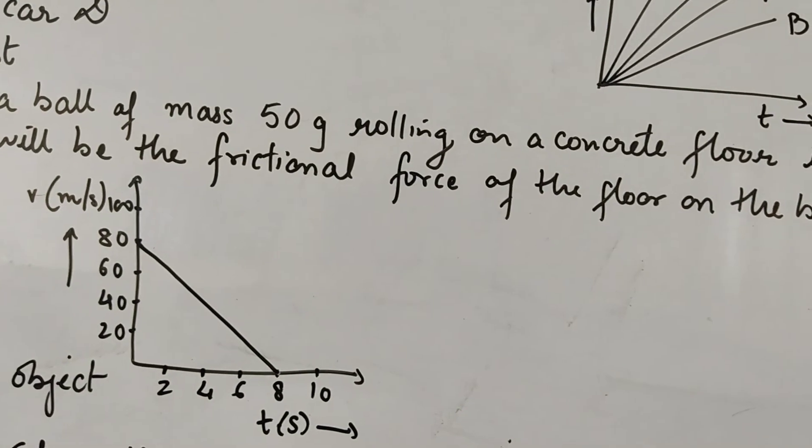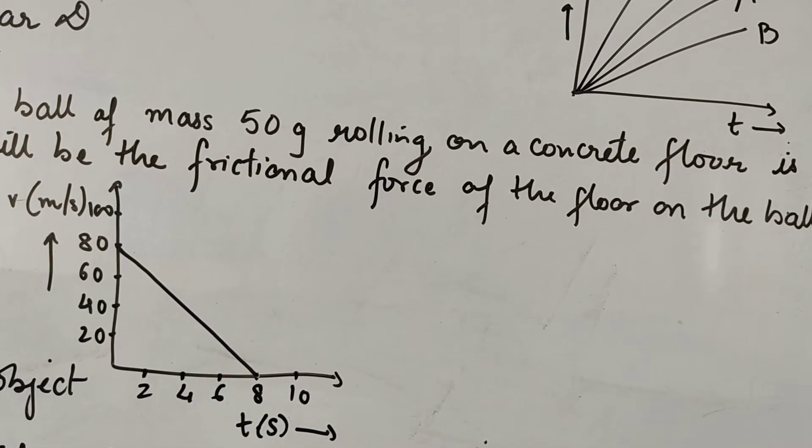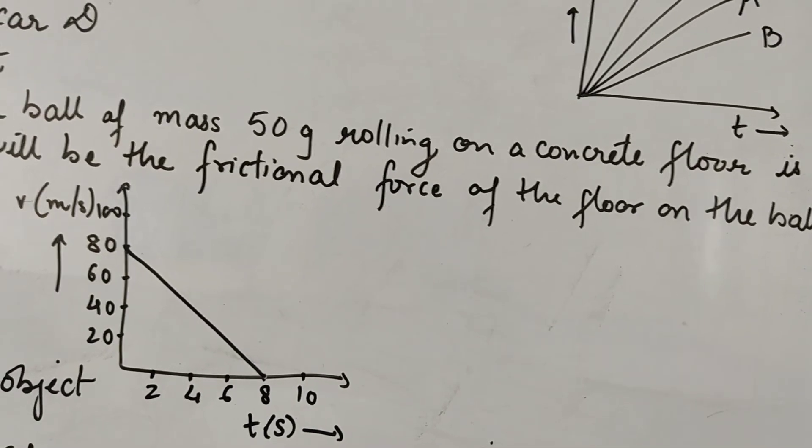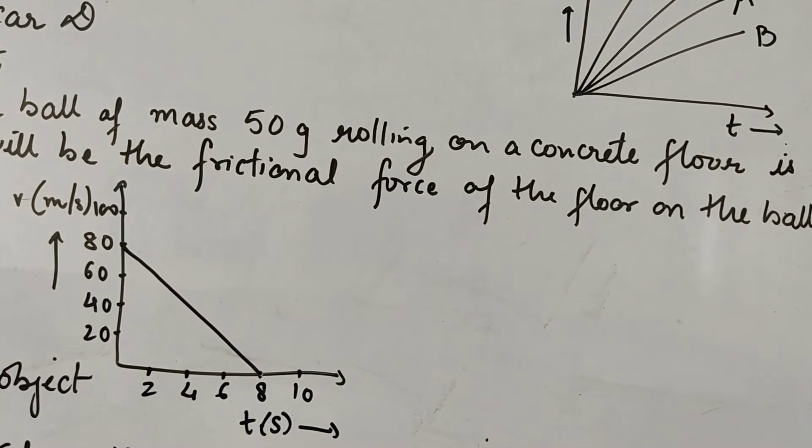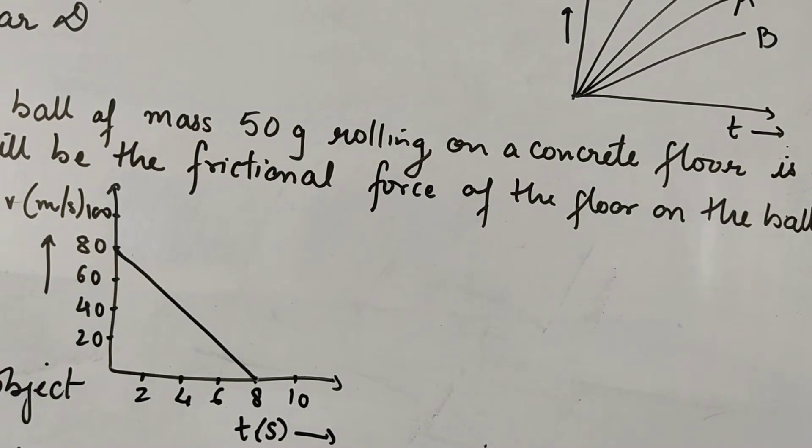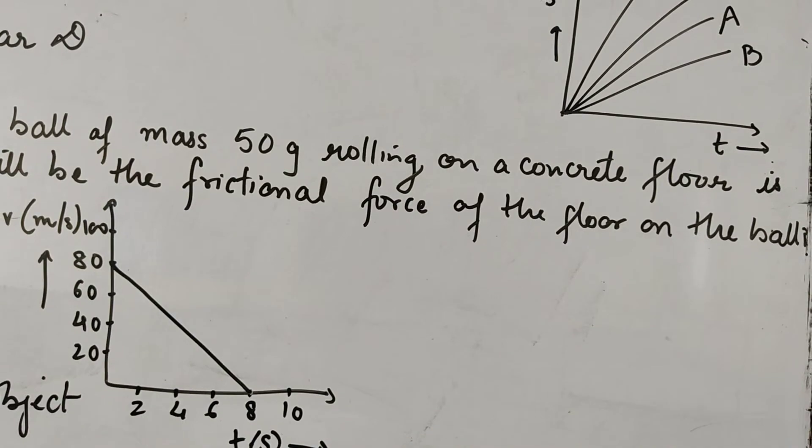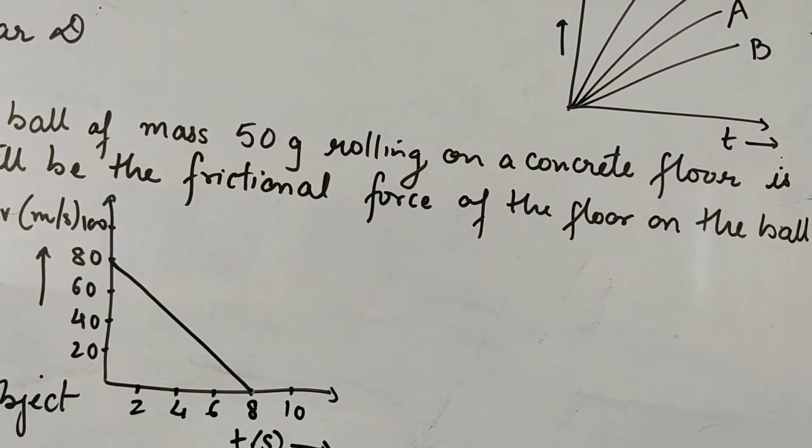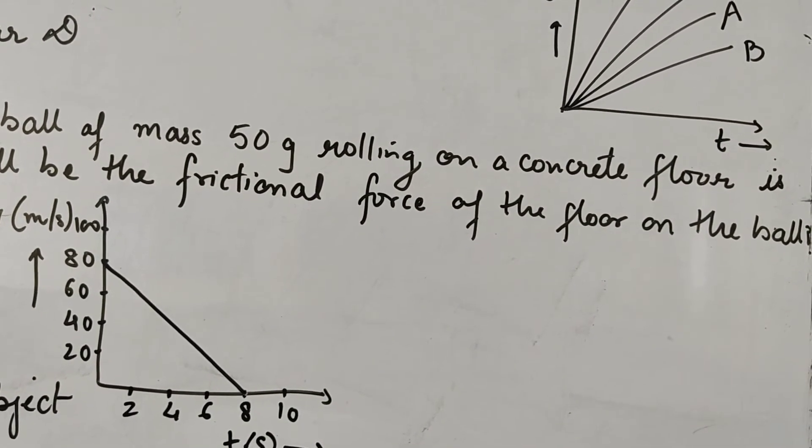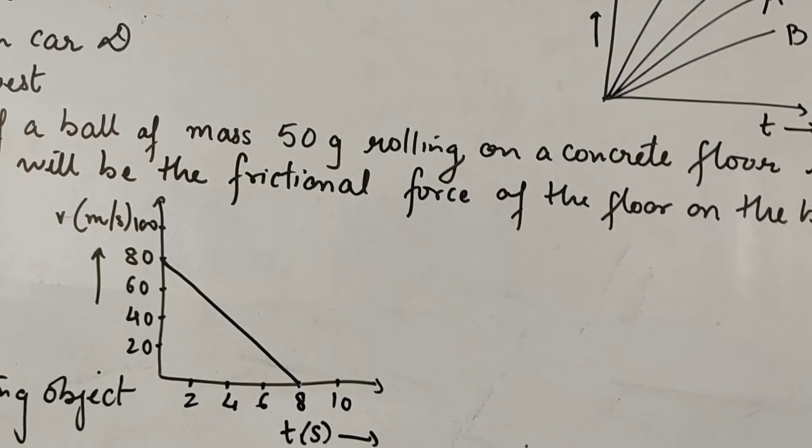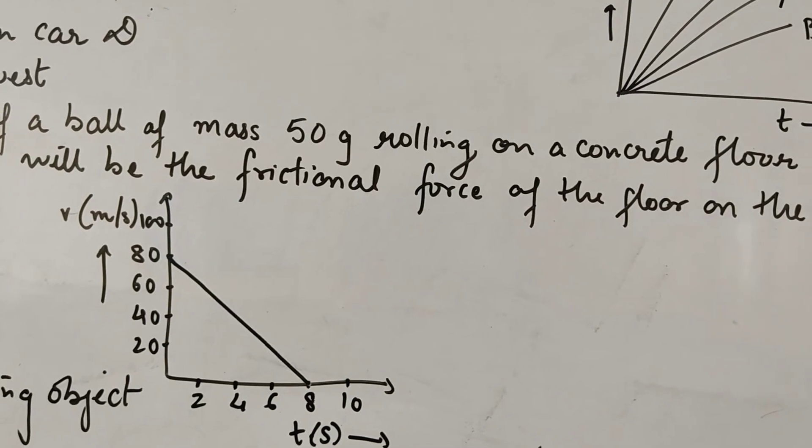So we can see that initially V stands for speed. So initially speed of the ball is 80 meter per second and at last, finally after 8 seconds, the speed becomes 0 meter per second. It means ball comes to rest. And we know the reason why ball comes to rest because of the frictional force acting on it in a direction opposite to the direction of motion of the ball.